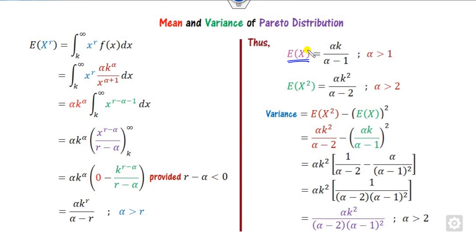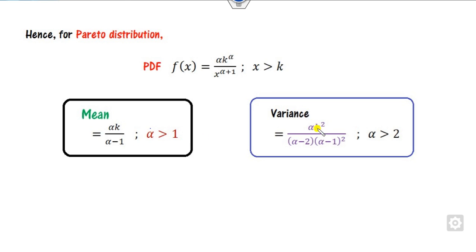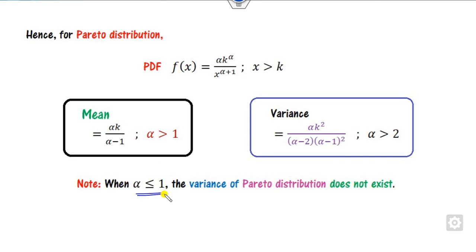Hence, this is the mean of the distribution and this is the variance of the distribution. So what is the meaning of this expression? Whenever alpha is less than or equal to 1, the variance does not exist. Whenever alpha is less than or equal to 0, the mean of the Pareto distribution does not exist. So this is the way you can compute the mean and variance of the Pareto distribution.